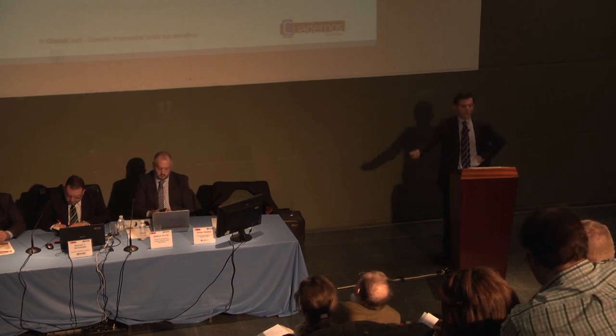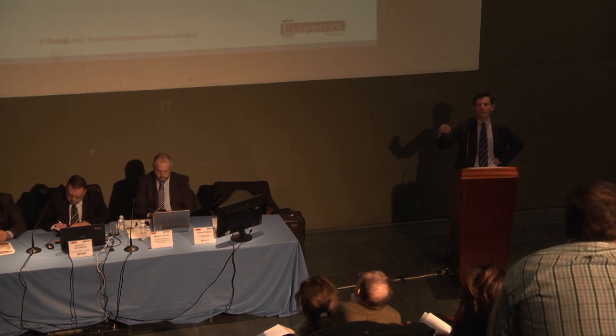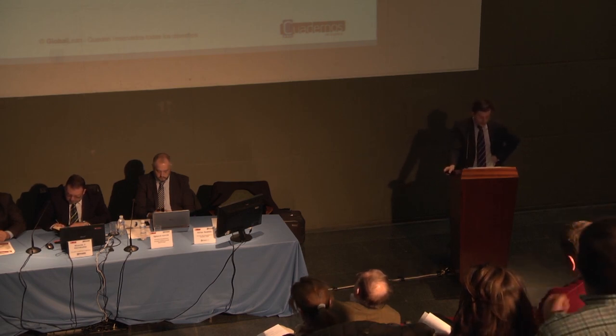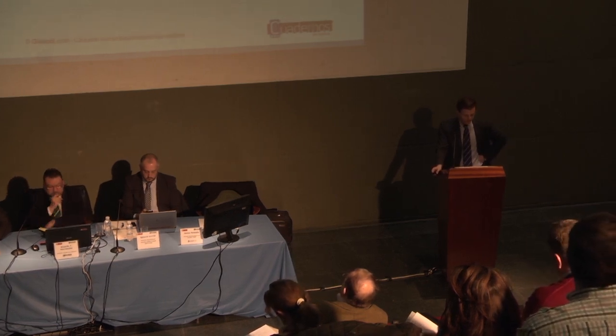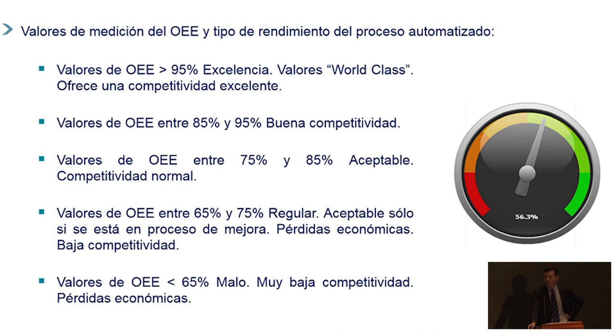El OEE es un porcentaje: multiplica disponibilidad por rendimiento por calidad sobre el 100% teórico. Por debajo del 65% de eficiencia de cualquier proceso, estamos hablando de que es muy malo. Los valores de world class o clase mundial son el 95%, que en entornos en España es ciencia ficción. Nosotros solemos estar entre el 65% y el 75-85%. Esto significa perder dinero: son inversiones de muchos millones de euros que resultan en procesos ni eficientes ni rentables.